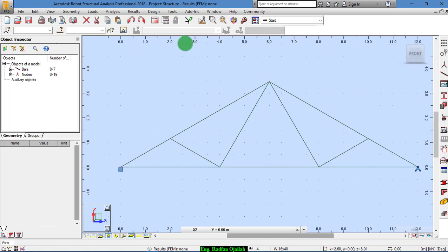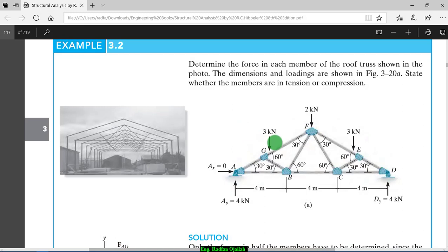The next step is assigning loads. We have 3 kilonewtons, 2, and 3. We have here also the reactions pre-calculated, so don't worry about them. The software would calculate them automatically.